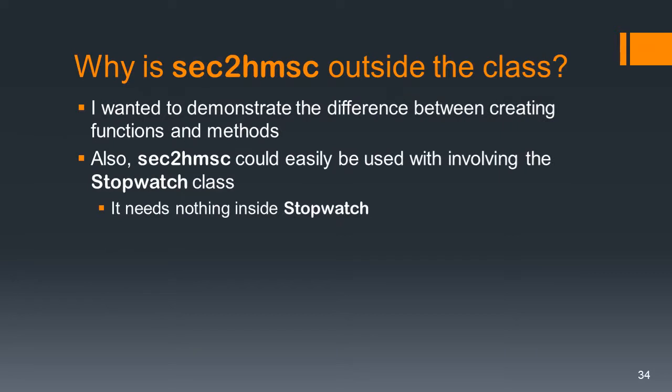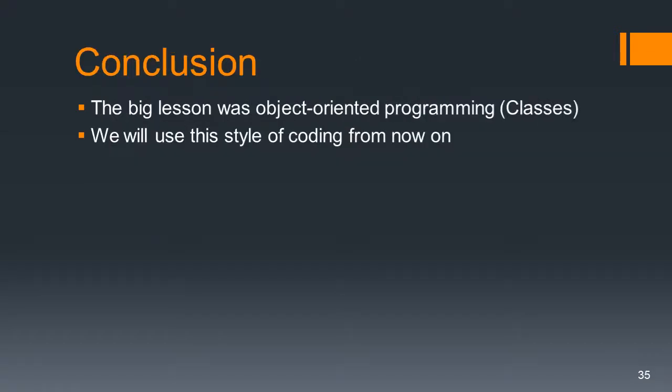You may be asking why we didn't put seconds_to_HMSC as a method inside the class. First, I wanted to demonstrate the difference between creating a standalone function and creating methods inside a class. But more importantly, seconds_to_HMSC does not need the Stopwatch class — therefore it really shouldn't be inside it; it should be an independent function. The big lesson in this slideshow was object-oriented programming. I realize you don't understand everything about OOP in one hour, but I hope you've got a taste of how it works, and we're going to be using this style of coding from now on.